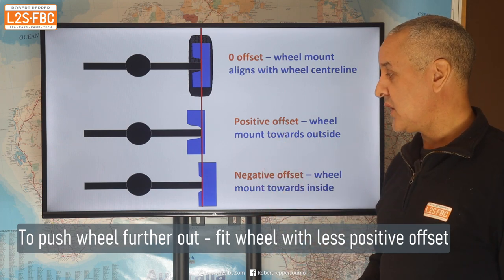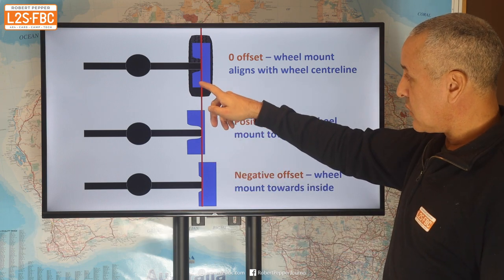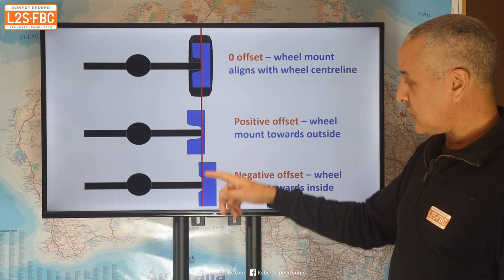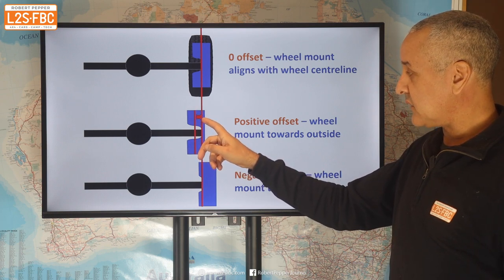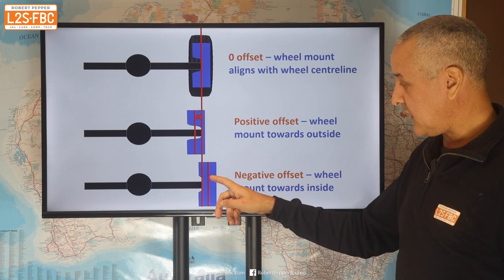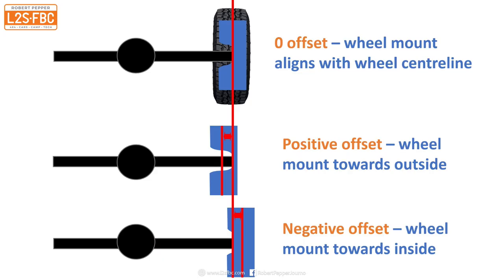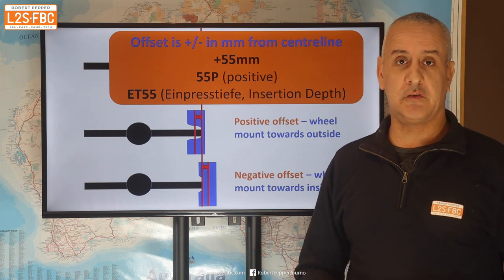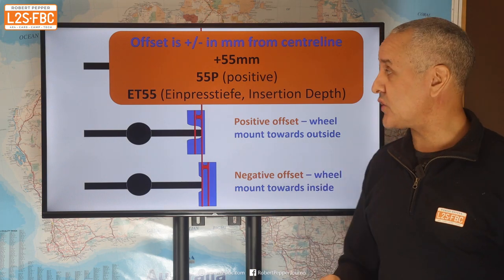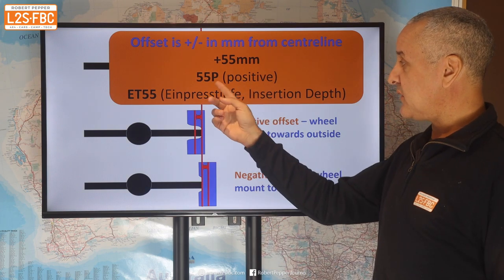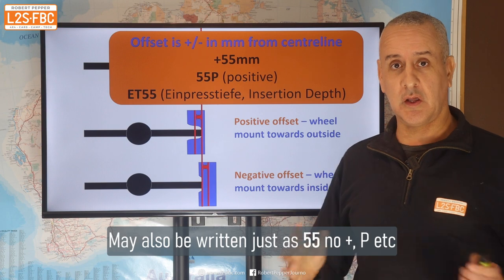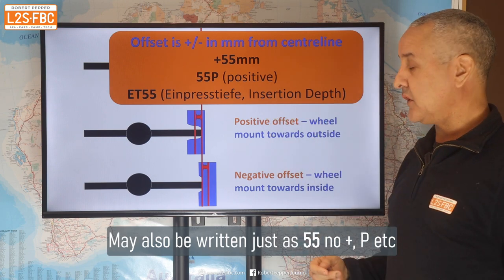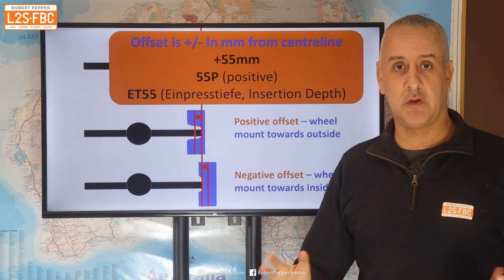Notice that the wheel is centred here, moved inboard here, and outboard there. The amount of offset is this distance — there's your centre line and there's where it's actually mounted. That distance is the amount of offset, which we measure in millimetres. For example, we might have a 55mm positive offset, which is what we have on the Ford Ranger. That might be written as +55mm, as 55P for positive, or as ET55 — a German term basically meaning insertion depth. So +55, 55P, ET55 — it's all the same thing.